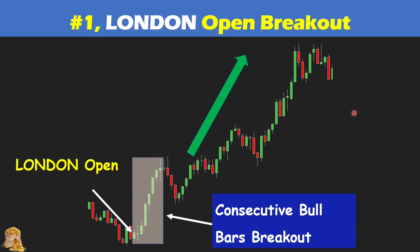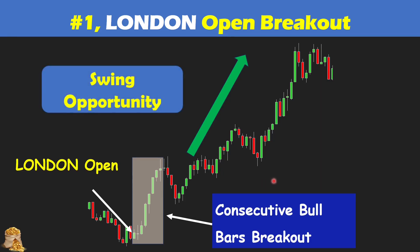Looking at the chart, the day goes up a lot — this is a trend day. So how do you decide whether it is a trend day or whether to swing or just scalp? Only when the market develops can you tell. As the market develops, there are no big bear bars or consecutive bear bars to reverse, and no sign the trend will reverse. When you do the swing, you want to keep your stop loss updated to make sure you don't lose much, and if you're in a swing trade, you want to watch for signs that the trend is ending.